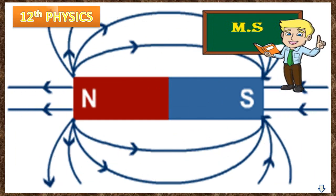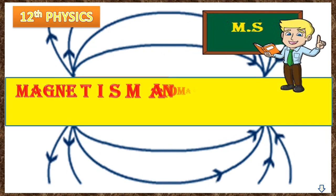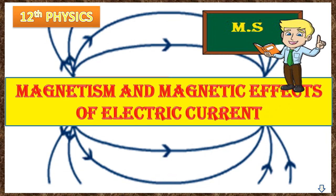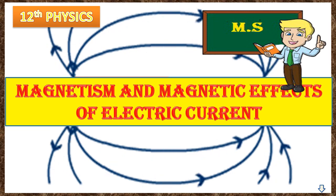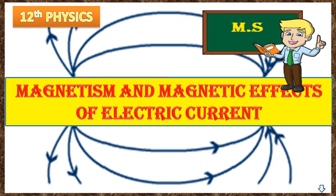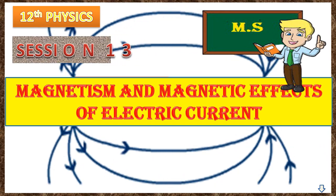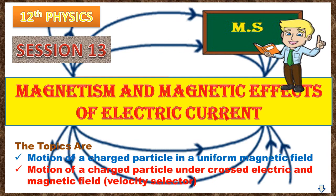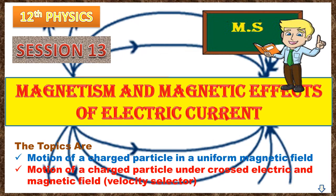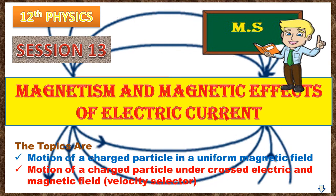Today, in our 12th Standard Physics class, we are learning about magnetism and magnetic effects of electric current, which is the 3rd unit of 12th Standard Physics. This is our 13th session. In this session, we are going to learn about motion of a charged particle in a uniform magnetic field, motion of a charged particle under crossed electric and magnetic field, which is called as velocity selector.